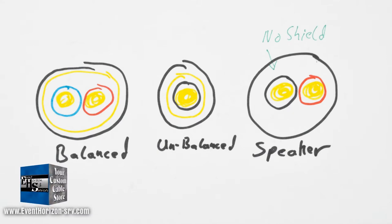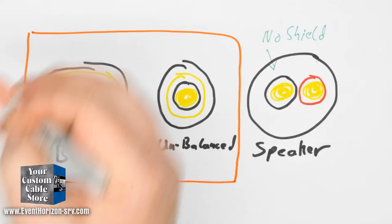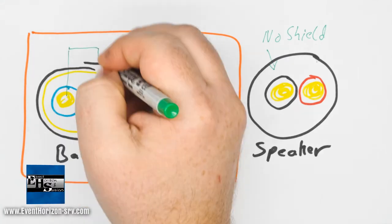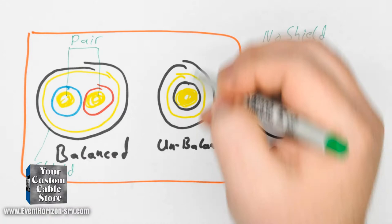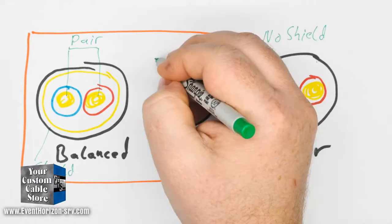The two wires we're concerned about are balanced and unbalanced. The balanced cable consists of a twisted pair of conductors in a shield, and an unbalanced cable consists of a single center conductor with a shield around it.